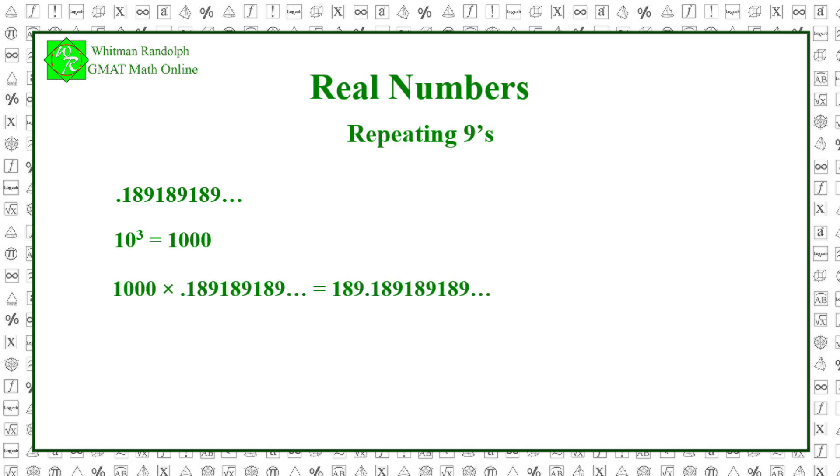So, 1,000 times .18181818, etc., equals 189.181818, etc., and so forth. Then subtract the original number. 189.181818, etc., minus .181818, etc., equals 189. And you have a nice, easy to work with integer, which is the same as the digits in the repetition. Then what would 999, which is 1,000 minus 1, times .181818, etc., be? As we just showed, it would be 189. Like magic!